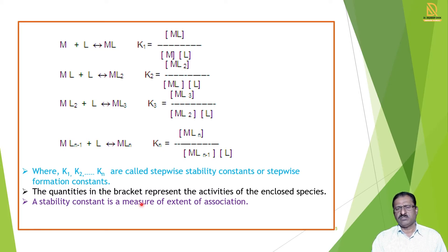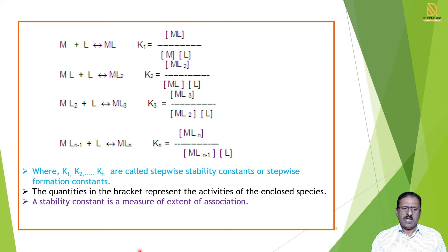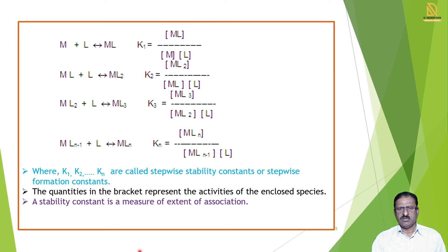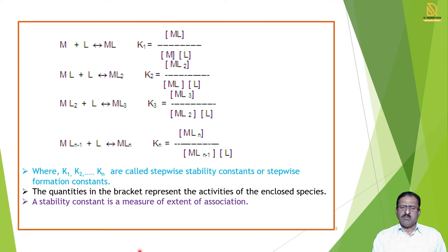The quantities in brackets represent the activities of the enclosed species. A stability constant is a measure of the extent of association. When we take actual quantities, we can determine which complex is more stable and which is less stable. Here we see the expressions for the stepwise stability constant through these different reactions.